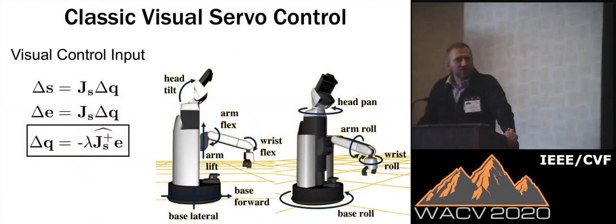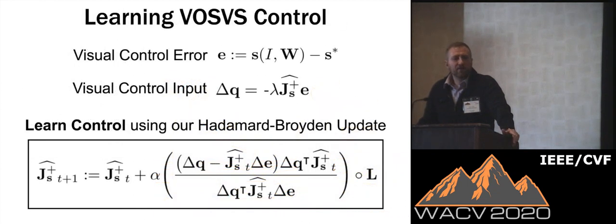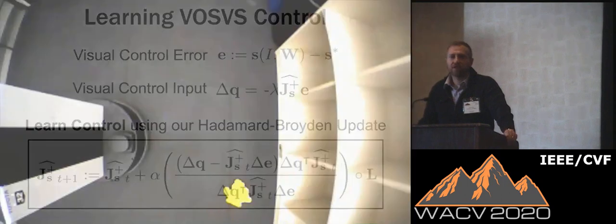The next part of our visual servo controller is minimizing errors using control inputs. Our goal was to learn a visual servo control policy in real time automatically, but this wasn't possible using previous methods, so we developed our own Hardiman-Broaden update formulation, which allowed us to learn a visual servo control policy in real time without any fiducial markers or calibration.